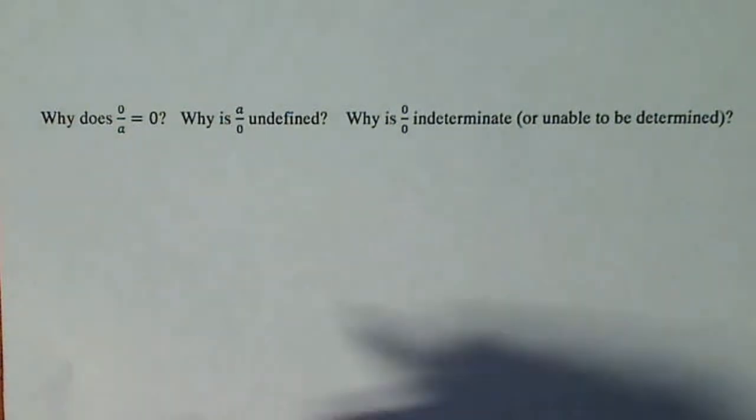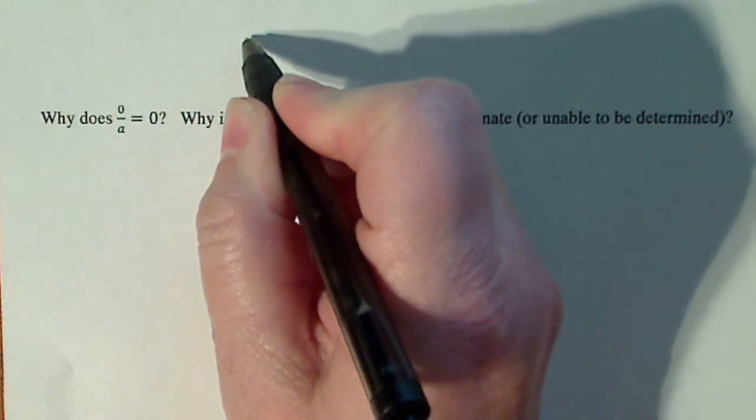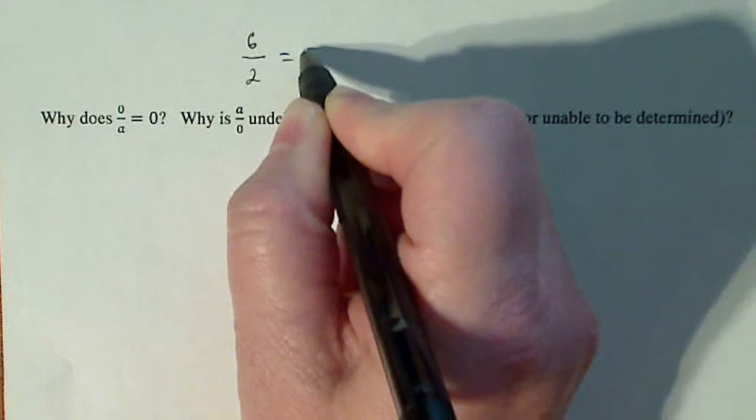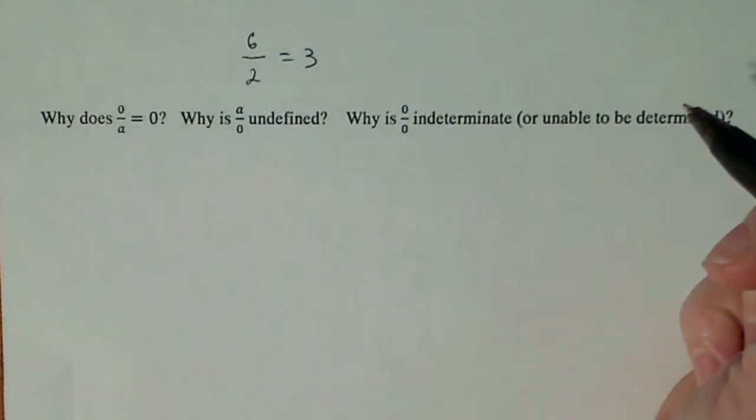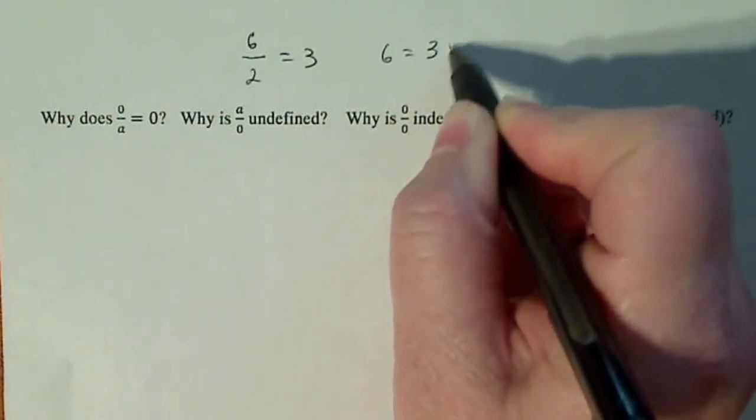The way that we do this is based on this idea right here. If I have 6 divided by 2 equals 3, how do I write that as a multiplication problem? Well, that's just 6 equals 3 times 2.